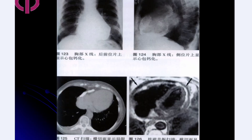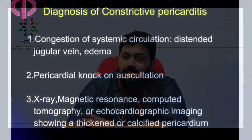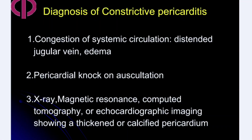These images show a chest X-ray with an enlarged bottle-shaped heart and calcification visible on CT. The thin rim of fluid associated with calcification can be seen. Diagnosis of constrictive pericarditis is based on clinical signs of systemic congestion — distended jugular veins, edema — a pericardial knock on auscultation, and imaging (chest X-ray, cardiac MRI, CT, or echocardiography) showing a thickened or calcified pericardium.